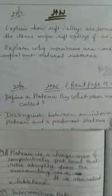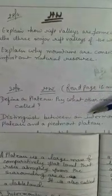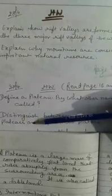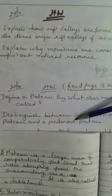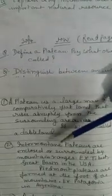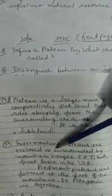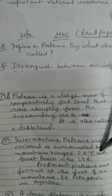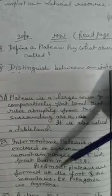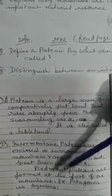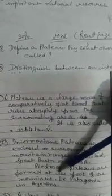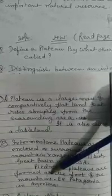Next question: distinguish between an intermontane plateau and a Piedmont plateau. Intermontane plateaus are enclosed or surrounded by mountain ranges — example, Tibet and the Great Basin in the USA. Piedmont plateaus are formed at the foot of the mountains — example, Patagonia in Argentina.